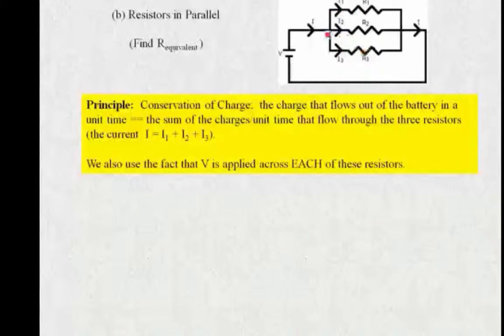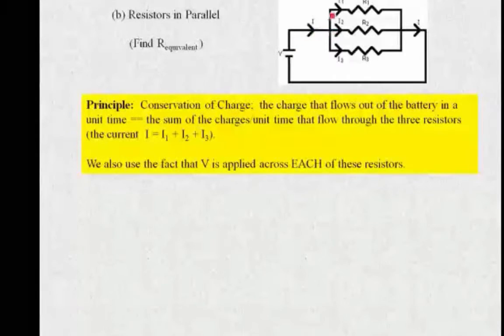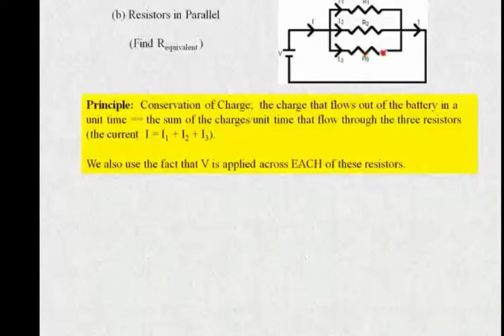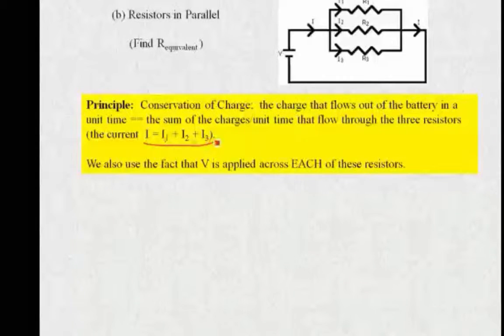Think of it this way, that if you took a time interval and looked at the charge that was coming out of the battery, when it reached here, the charge would divide between these three legs of the circuit. Well, if it's per unit time then, that will give you the current, and so you have this relationship here, that the total current is just the sum of the three currents.